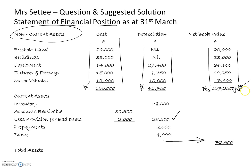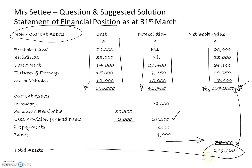Adding up the current assets and lining them up beneath the net book value of the non-current assets, I add these together to get the total assets figure of 179,750. As we know, total assets must equal capital plus liabilities.